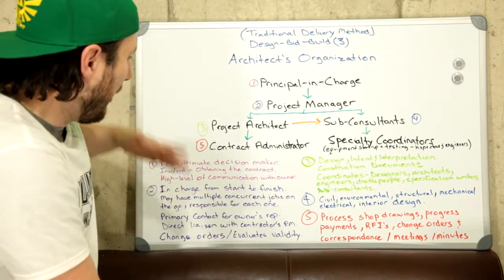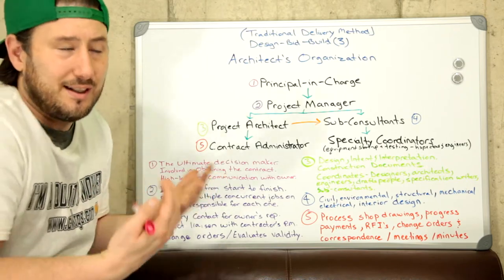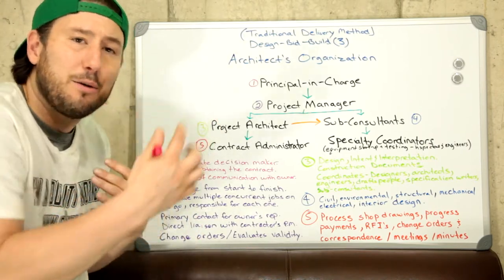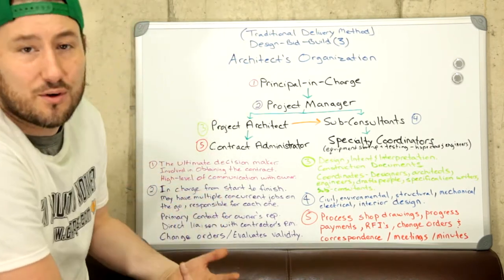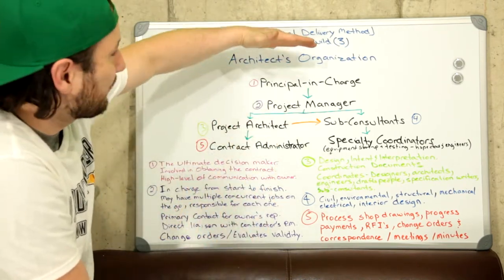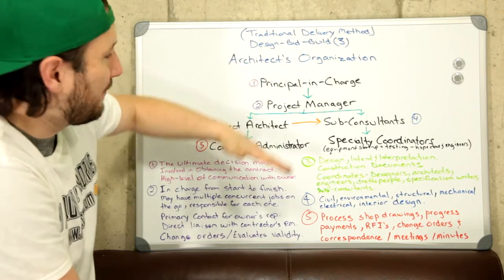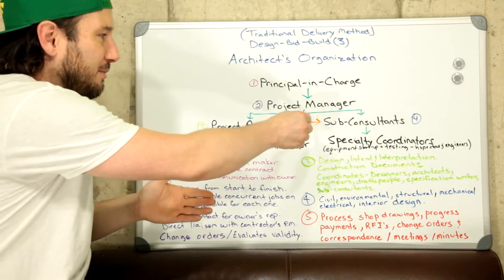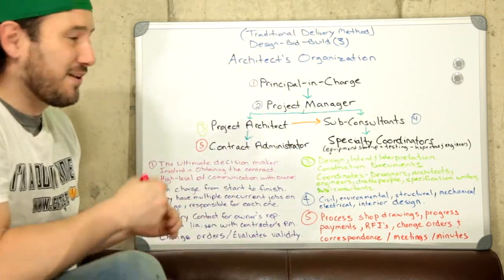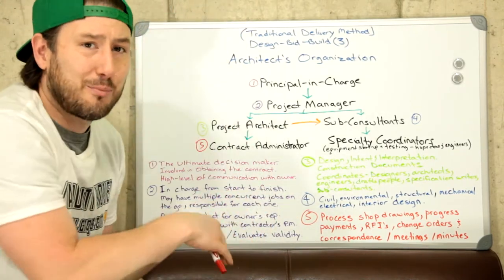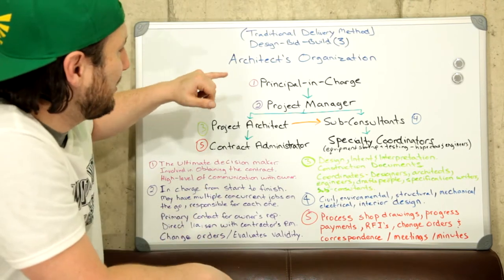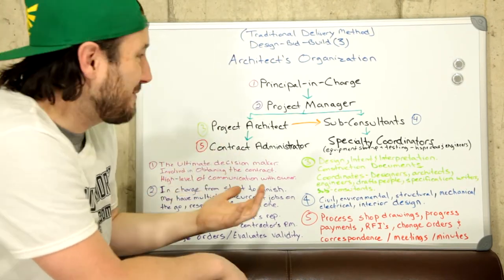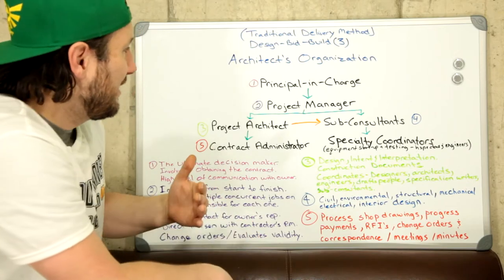The principal in charge is like the CEO — the boss, the owner — who goes out and gets the contracts from the owner. This person is also the direct, high-level line of communication with the owner. As a contractor, you have to go through the project manager to get to the owner. The principal in charge will hire or assign the project manager.